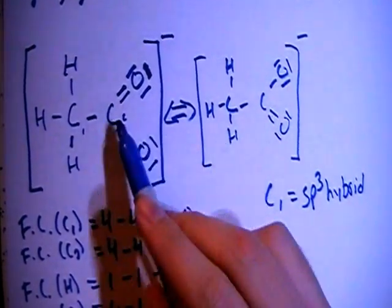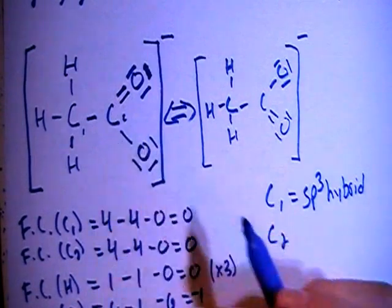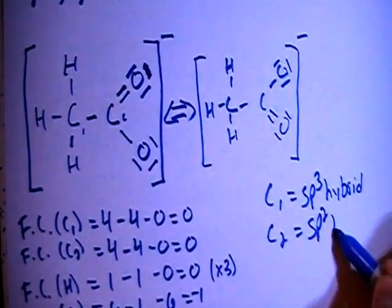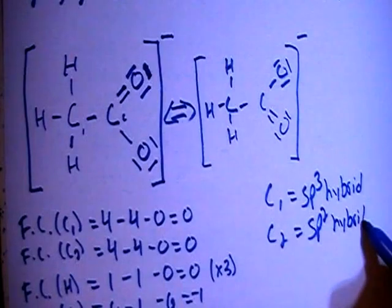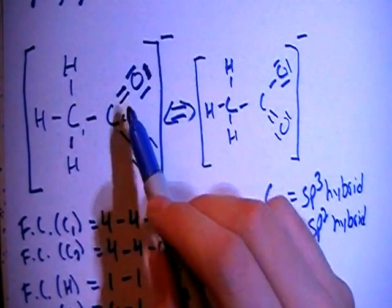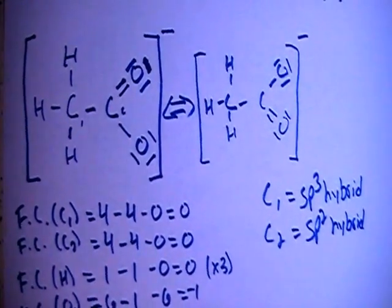Carbon 2, this carbon right here, 1, 2, 3 bonding sites, which means SP2 hybrid. And notice that the double bond still counts as a single bonding site, not 2.